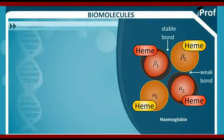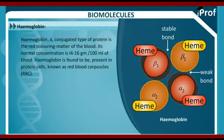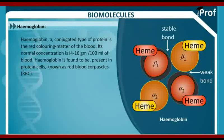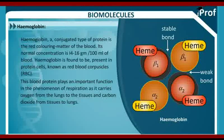Next, hemoglobin. Hemoglobin, a conjugated type of protein, is the red coloring matter of the blood. Its normal concentration is 14 to 16 grams per 100 ml of blood. Hemoglobin is found to be present in cells known as red blood cells or RBCs. This blood protein carries an important function in the phenomenon of respiration, as it carries oxygen from the lungs to the tissues and carbon dioxide from tissues to the lungs.